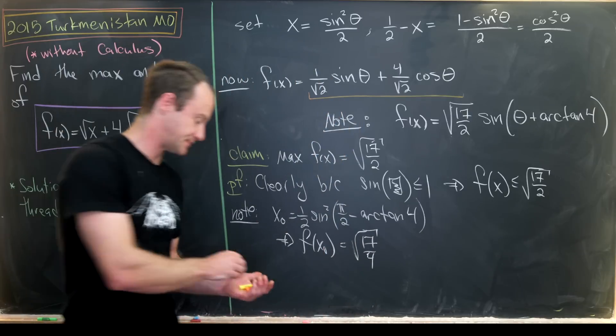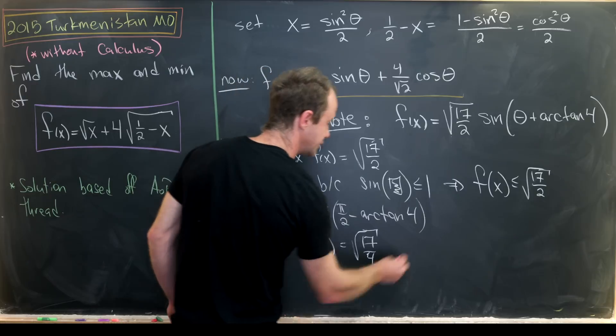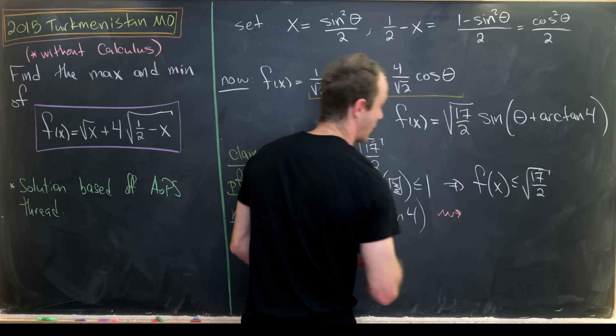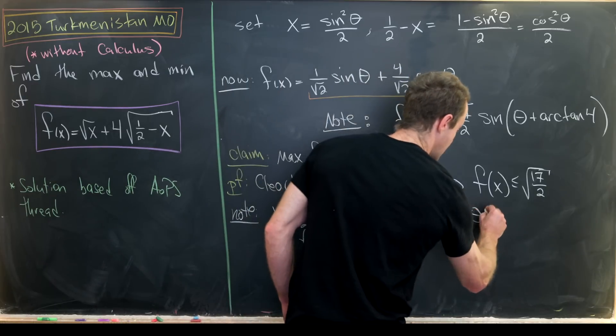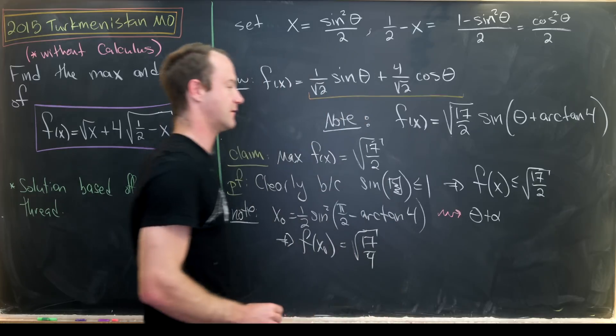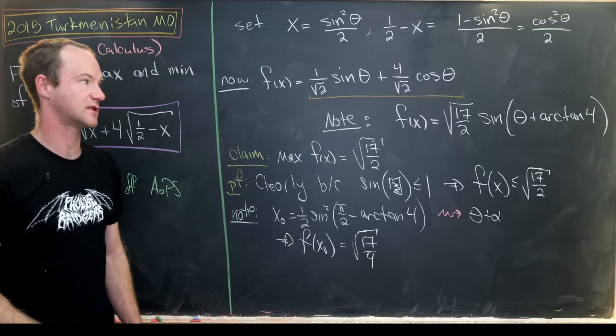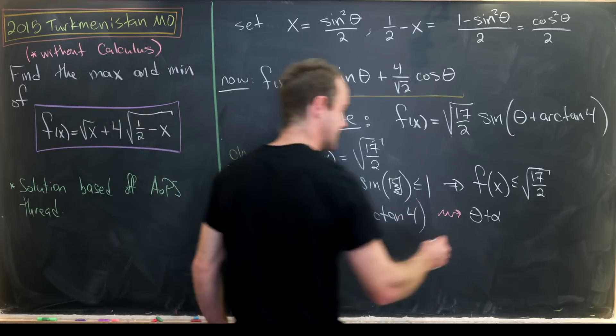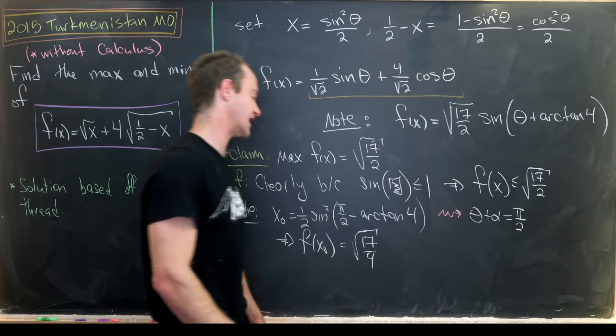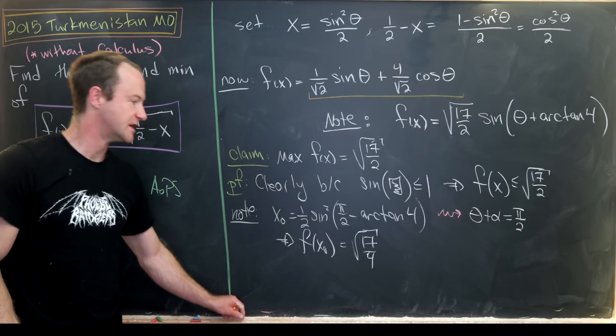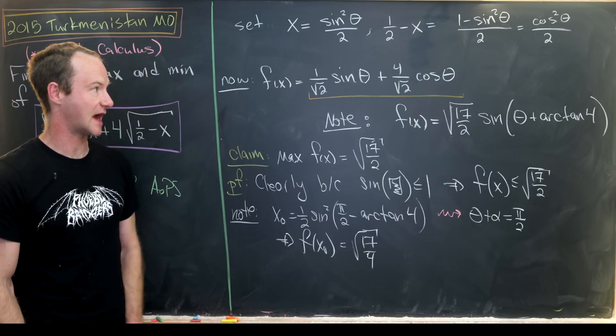And why is that? That's because under our substitution, this means our theta plus alpha that we had before. In other words, our theta plus arctan of 4 is in fact equal to pi over 2, but then sine of pi over 2 is equal to 1. So we've achieved that maximum.